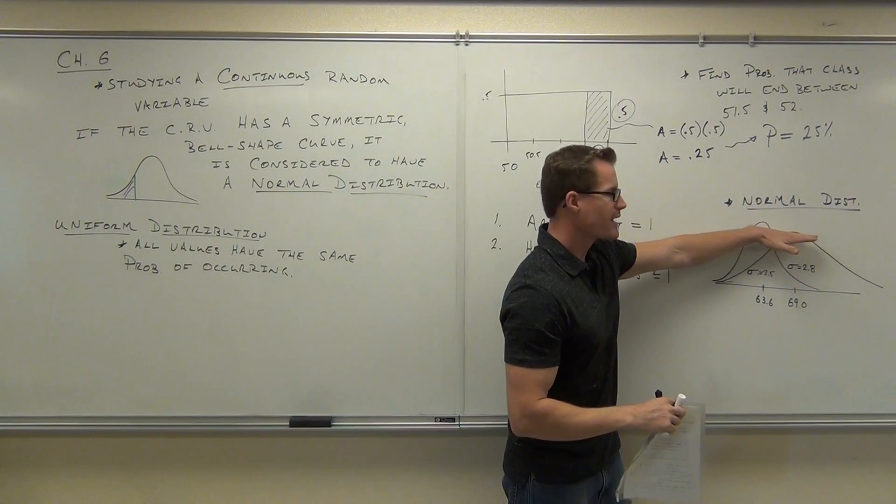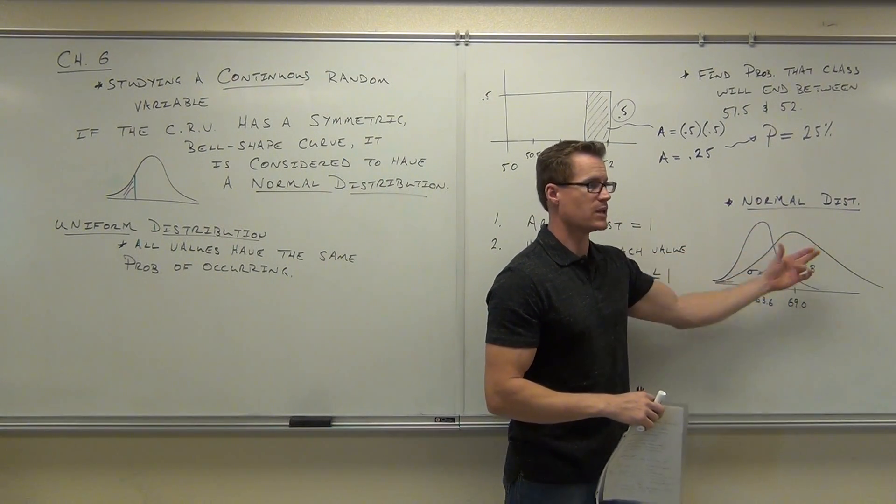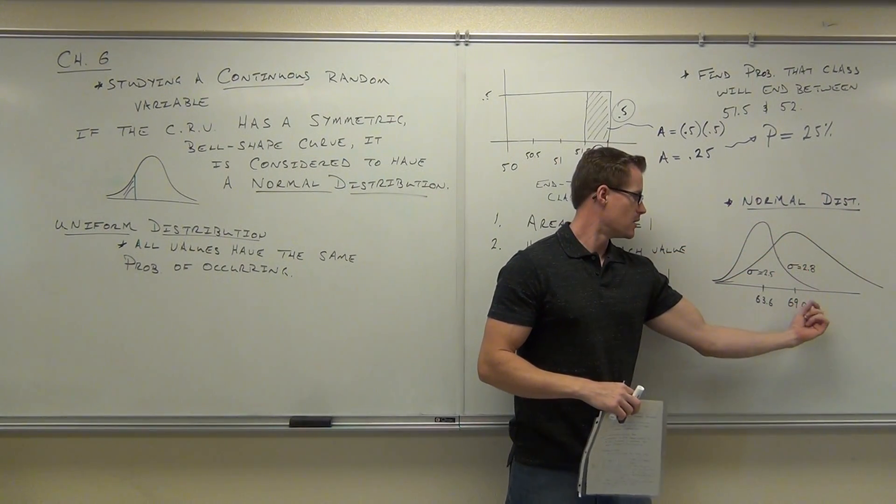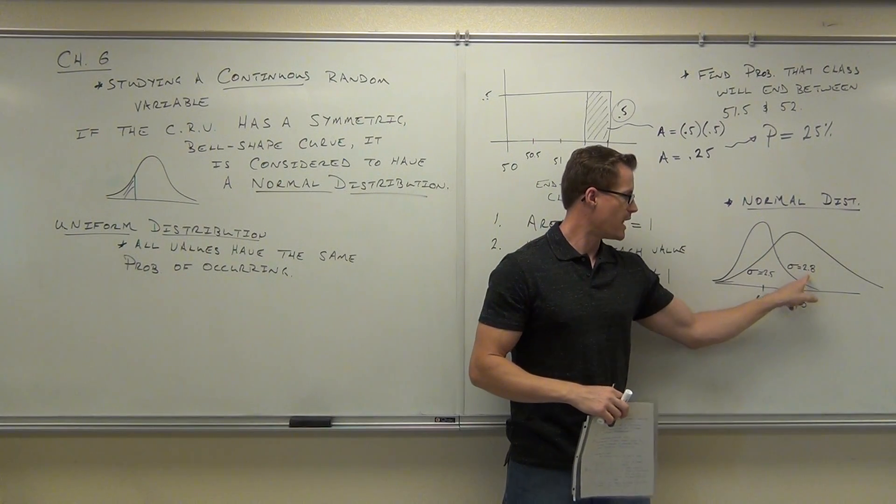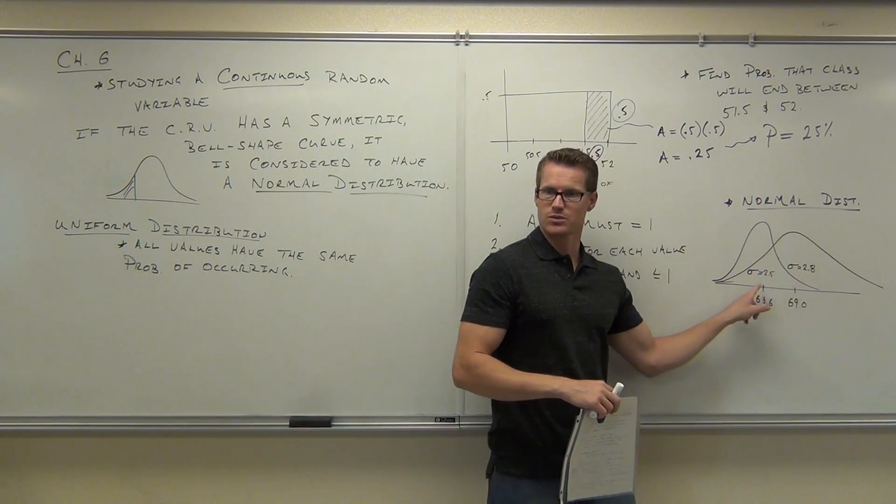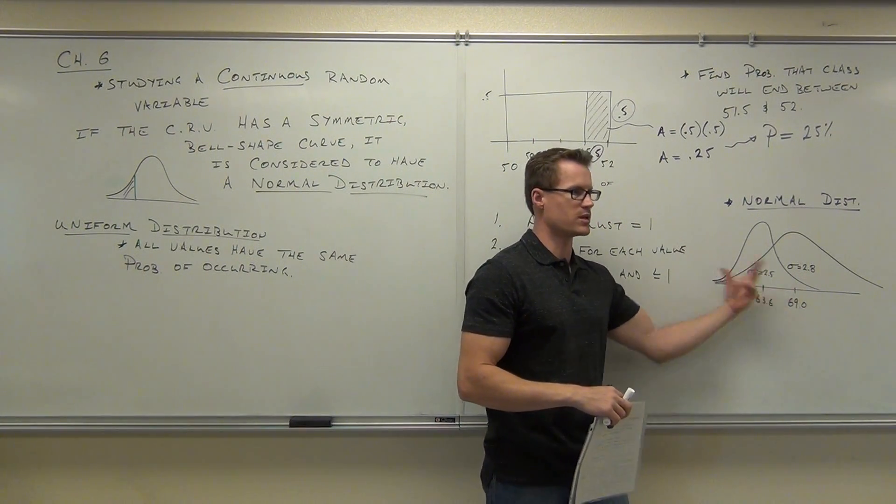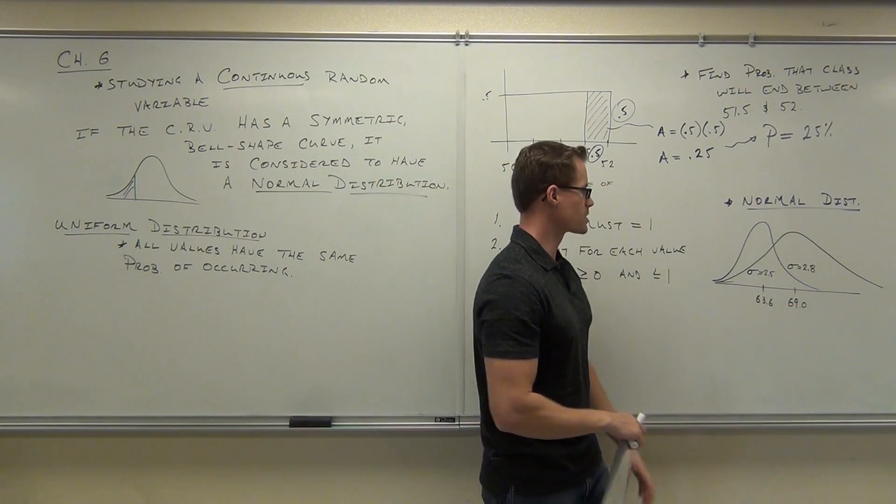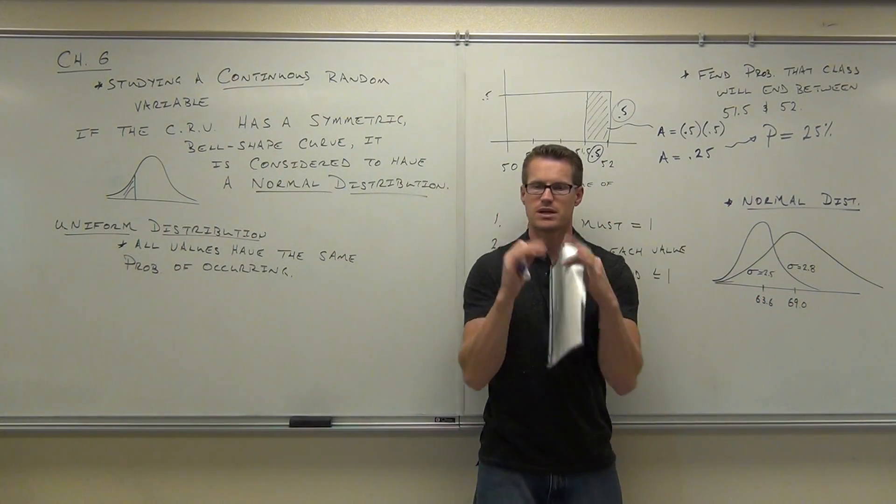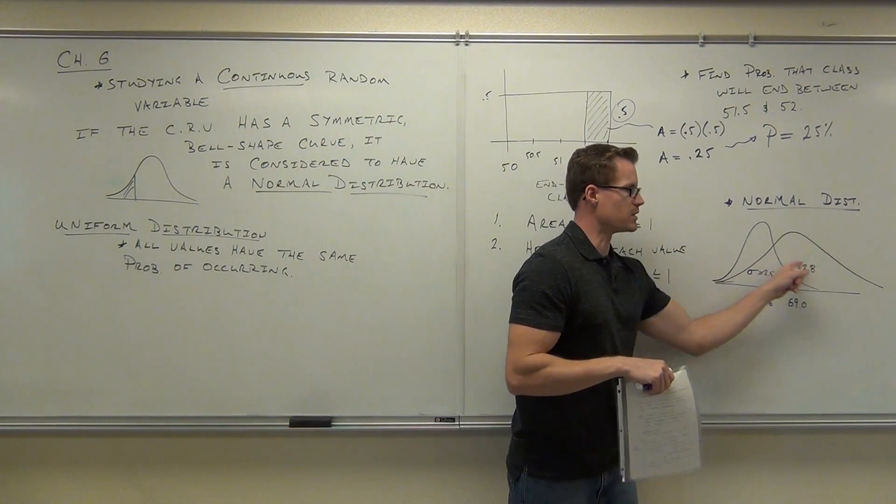So the height of the graph, a little bit lower, there's less people around that 69 because they're more spread out. They're a little bit more spread out than this one is. Not sure if you're following this example here. Okay, so standard deviation says how close we are to the mean. This one is closer than this one is.